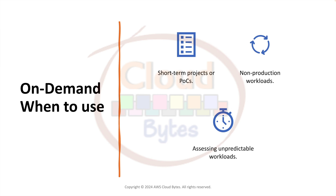When should you use on-demand? It is preferred for short-term projects or POCs, and non-production workloads — for example, spinning up instances for a performance test and then shutting them down. Also use on-demand when you don't know the pattern of the workload. If the workload is unpredictable, start with on-demand and then move to other pricing models once you understand your needs.